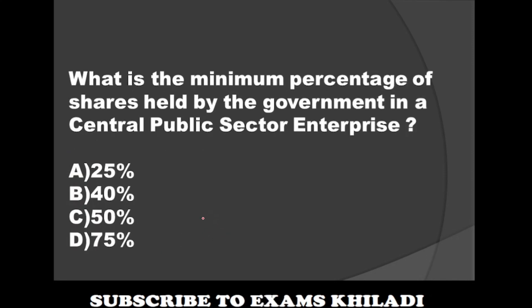Question: What is the minimum percentage of shares held by the government in a central public sector enterprise? Option A: 25%. Option B: 40%. Option C: 50%. Option D: 75%. The correct answer is Option C — 50%.